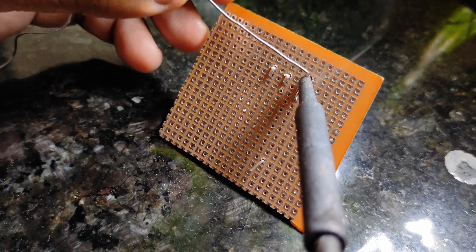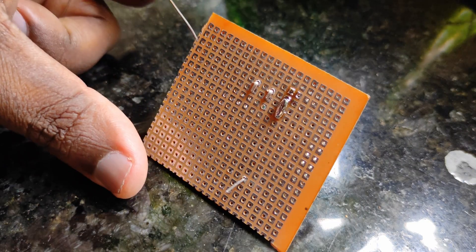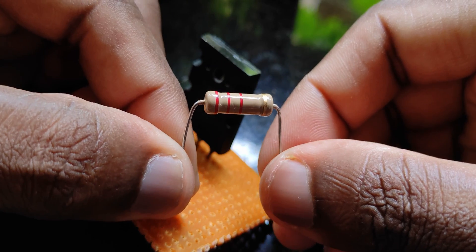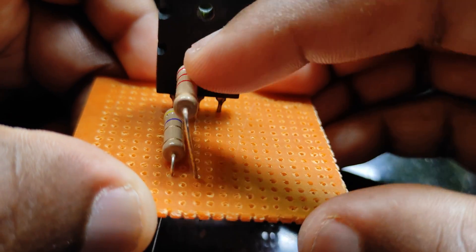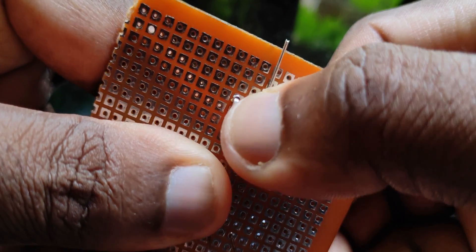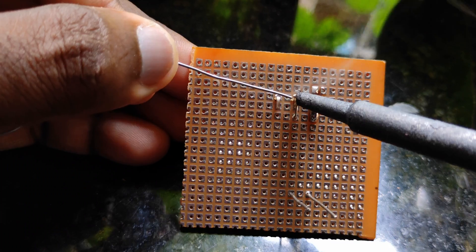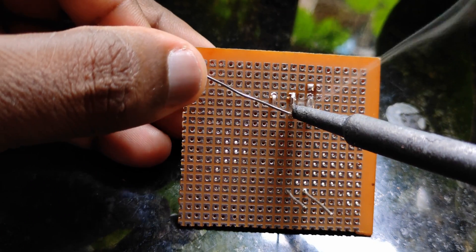Let's move to the next step. Take a 2.2k ohm 2 watt resistor and put that into the collector terminal and bend it over to the collector. Cut the extra terminals and solder it. Now we're almost finished—50 percent of the circuit complete.